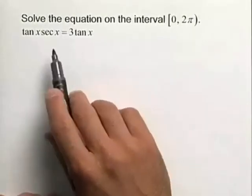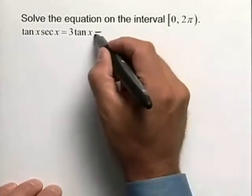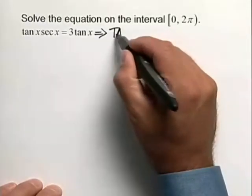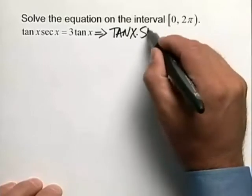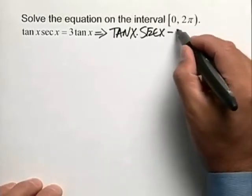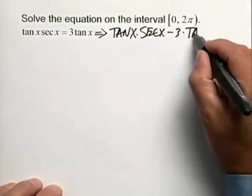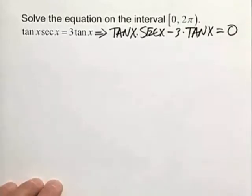First thing, let's move the 3 tangent x to the left hand side so our transformed equation looks like the tangent of x times the secant of x minus 3 times the tangent of x, that's going to be equal to 0.